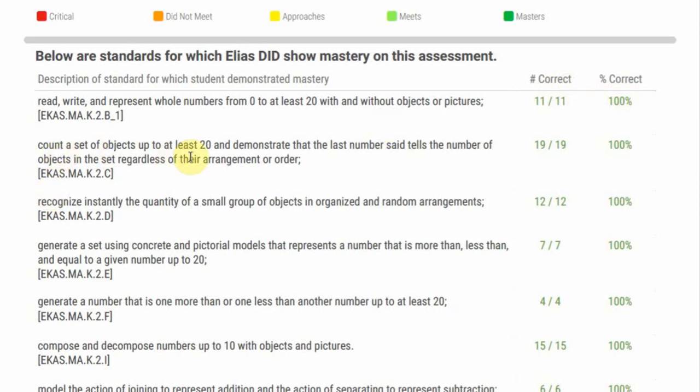Counts a set of objects up to at least 20 and demonstrate that the last number said tells the number of objects in the set regardless of their arrangement or order. 19 out of 19 right, and that was a hundred percent.